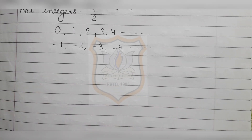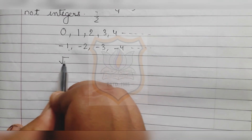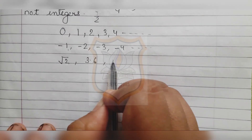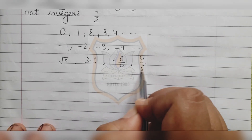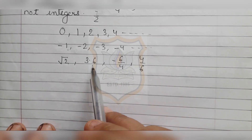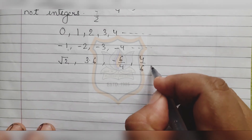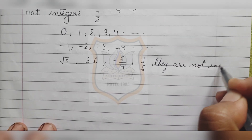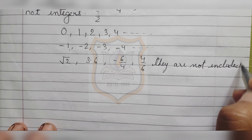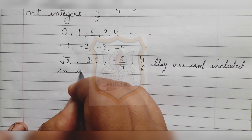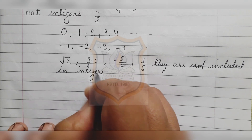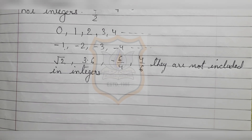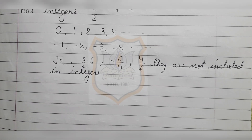Numbers that are NOT integers — meaning numbers not included in integers — are numbers like square root of 2, decimal numbers like 3.6, fractions like minus 6/4 or 4/6. All numbers in fractional form, decimal form, or square root form are not included in integers.